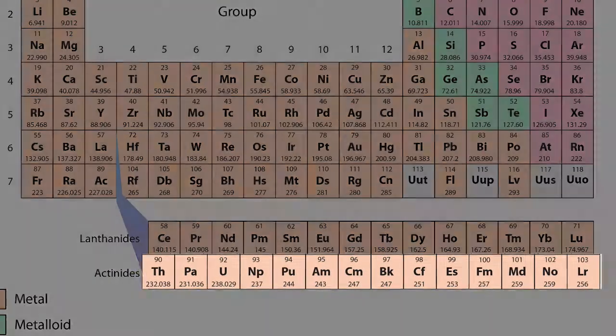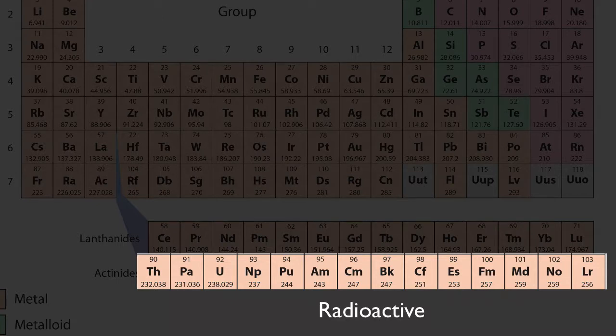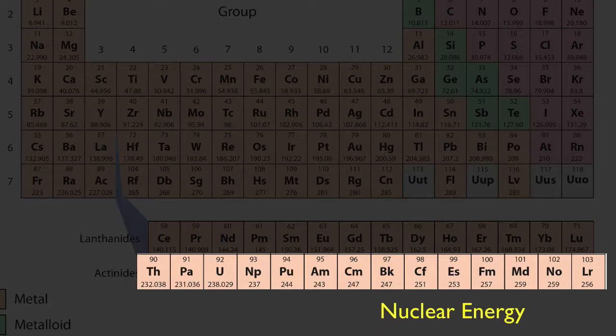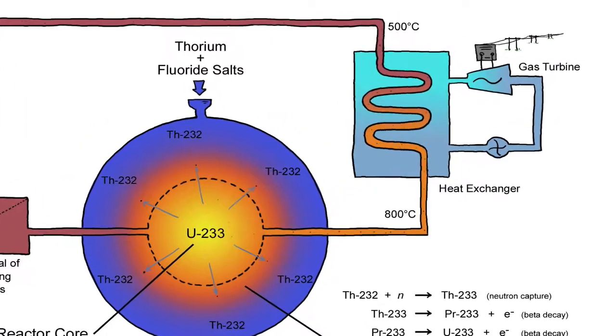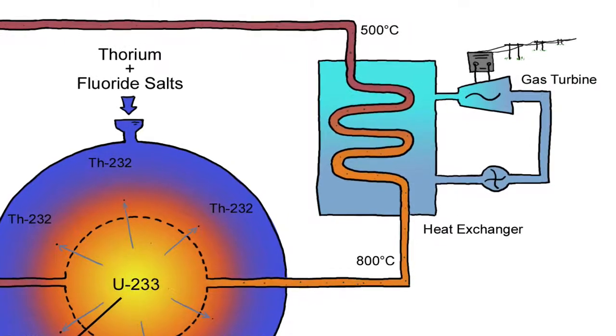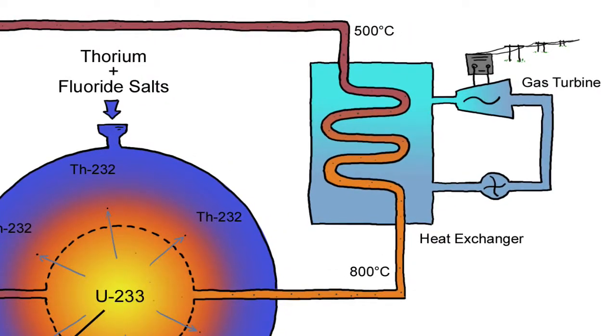The actinides are all radioactive elements. Later we'll be discussing the concept of radioactivity and also nuclear energy. Right now, I should tell you, most nuclear energy is generated by the fission of isotopes of uranium and plutonium. Here, these are actinides. But there's much promise in the first actinide, which is thorium. You really need to learn about thorium nuclear reactors. They offer a much more efficient, safe, and environmentally friendly means of nuclear energy. We'll discuss thorium reactors later.